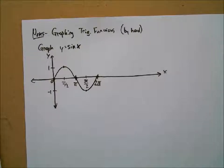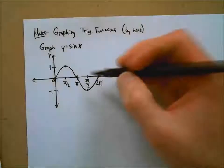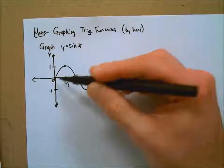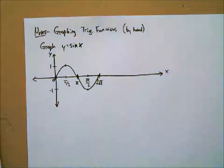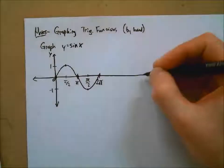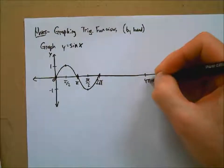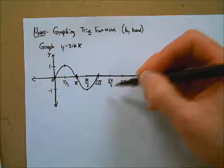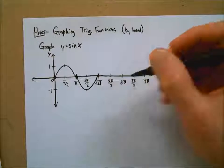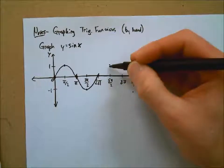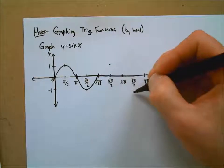Waves also tend to repeat, and in fact this would repeat if we kept going. The length of this wave is two pi — it starts at zero and goes to two pi. So if I wanted to go another full wavelength, I'd go out to four pi. We'll find the quarter points — so five pi over two will be at one, three pi at zero, seven pi over two at negative one, four pi back at zero.